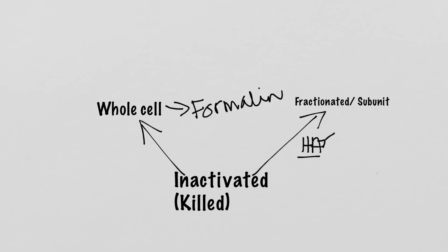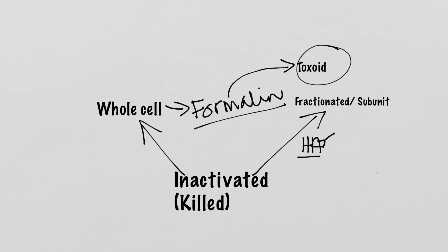Another example would be the tetanus toxoid vaccine. When we're thinking about tetanus infection, we're thinking about infection with the microorganism known as Clostridium tetani. Clostridium tetani produces a toxin known as tetanus toxin, and it's the tetanus toxin that is really deadly to us and causes disease. So what we've done is take the toxin and fix it with formalin, just like in the whole cell. When we fix the toxin with formalin, we make a toxoid. This is good because we make antibodies to the toxin — we'd be dead from the toxin before we could mount an antibody response — so by immunizing with the toxoid, we have antibodies and memory B cells ready to go should we encounter the toxin.